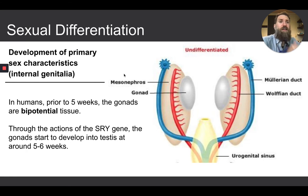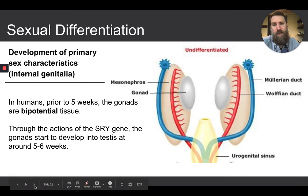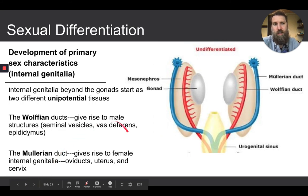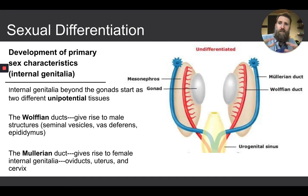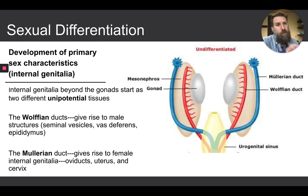This SRY gene basically determines testes or ovaries, and the development of testes starts another cascade — a hormonal cascade. We're going to dive deep into this cascade later, but let's touch on it here in early development. We're still talking about primary sexual characteristics, specifically the internal genitalia. We've covered the gonads — testes or ovaries — but there are other parts of the internal genitalia.